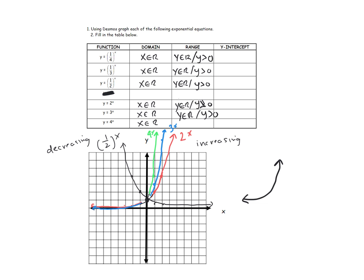All these graphs have the same range: y is greater than zero, never equal to zero. The y-intercept will all be the same because they all pass through the point (0, 1) — anything to the power of zero is 1. So any exponential function, unless you transform it, will have a y-intercept of 1.